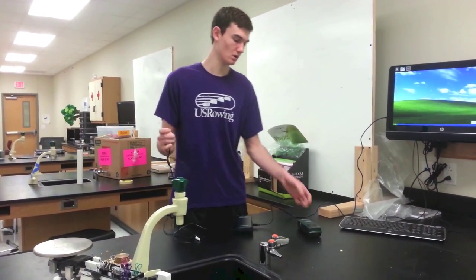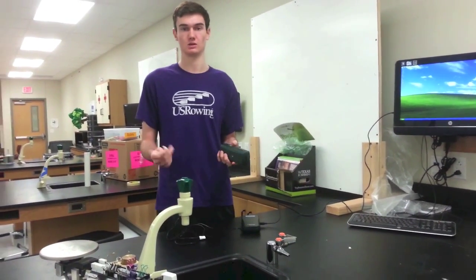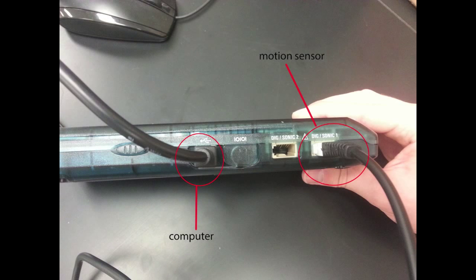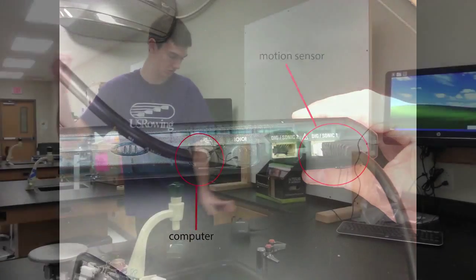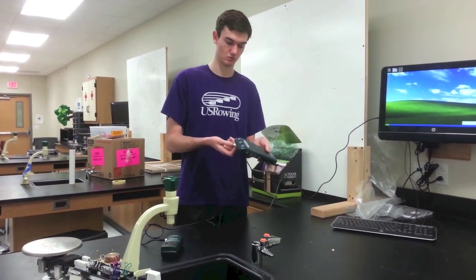As an example, I'm just going to use a motion detector to show you guys how to collect data. You would plug this white cord into the DIGSonic, and then you could either on the interface plug it into the DIGSonic 1 or 2, it doesn't really matter.